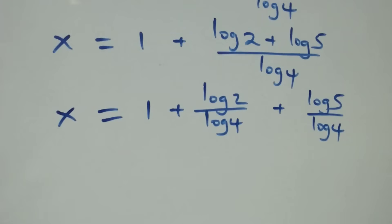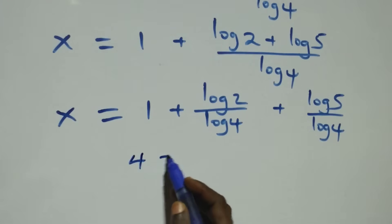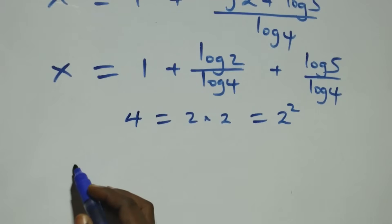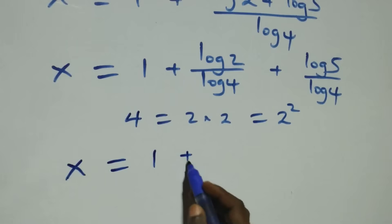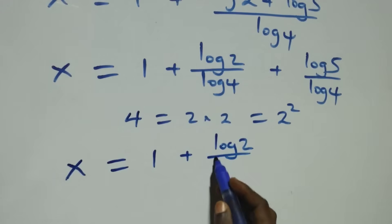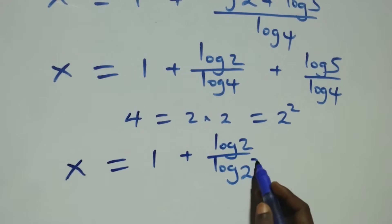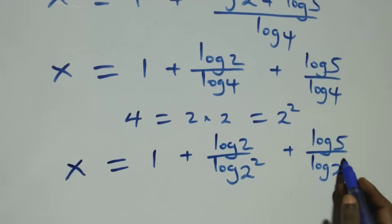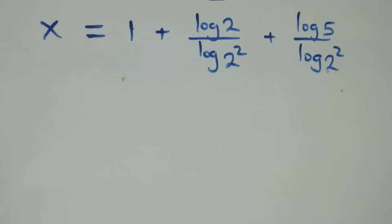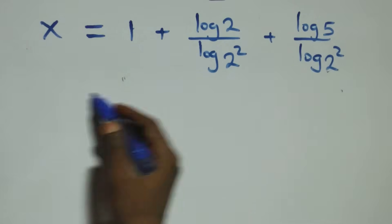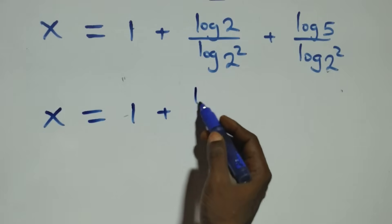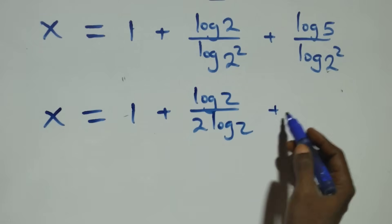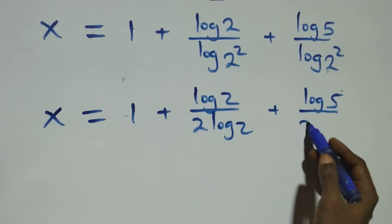We can express 4 as 2 squared, so x equals 1 plus log 2 over log(2 squared), plus log 5 over log(2 squared). Applying the power rule of logarithm, log(2 squared) becomes 2 log 2, giving x equals 1 plus log 2 over (2 log 2), plus log 5 over (2 log 2).